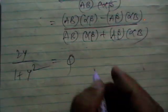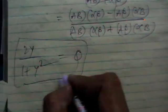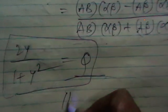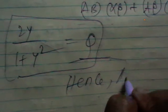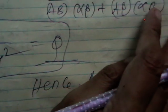which is nothing but Q. So on taking the 2Y by 1 plus Y square is equal to and simplifying we got Q. Hence Q, thank you.